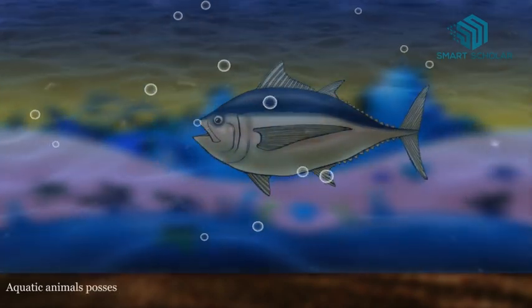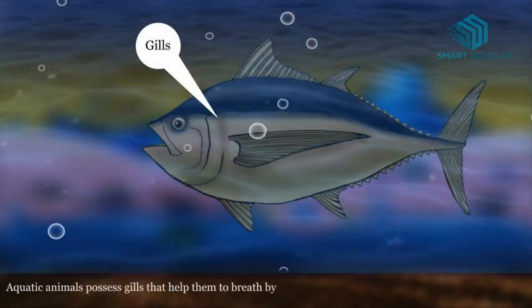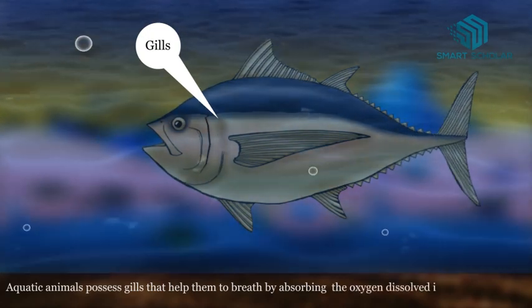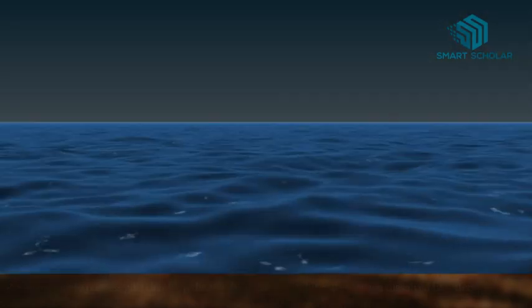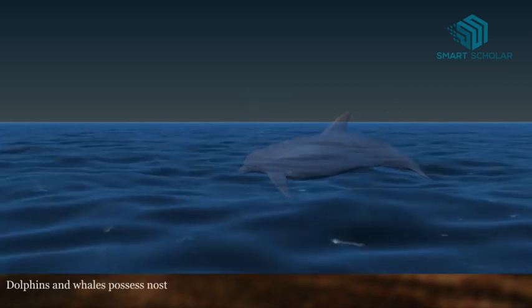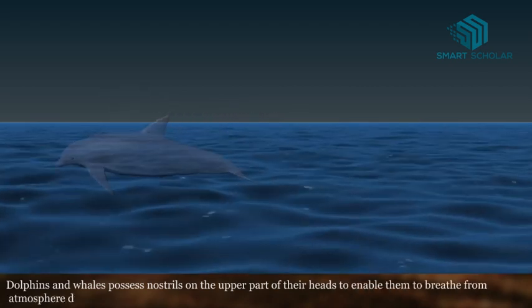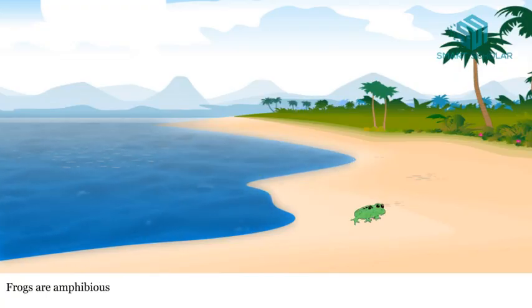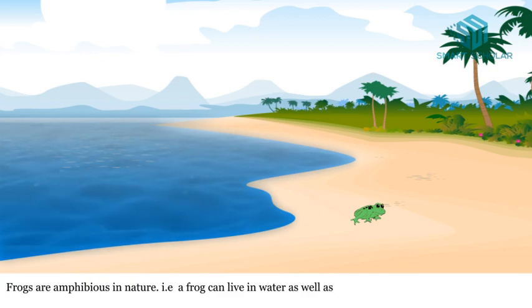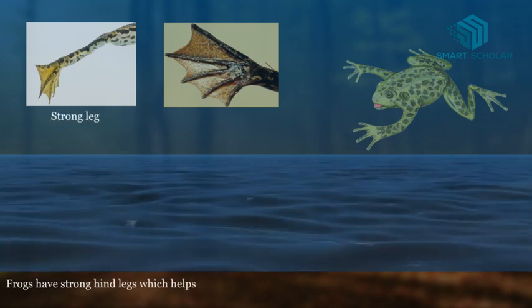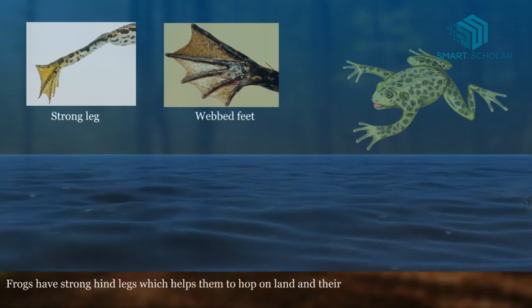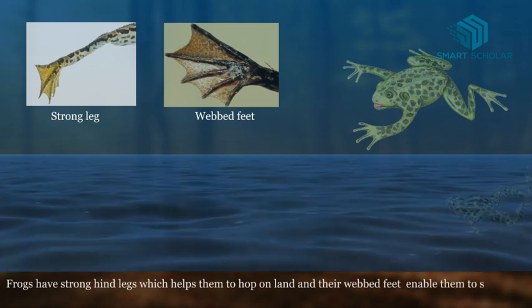Aquatic animals possess gills that help them to breathe by absorbing the oxygen dissolved in water. Dolphins and whales possess nostrils on the upper part of their heads to enable them to breathe from the atmosphere directly. Frogs are amphibious in nature — a frog can live in water as well as on land. Frogs have strong hind legs which help them to hop on land, and their webbed feet enable them to swim in water.